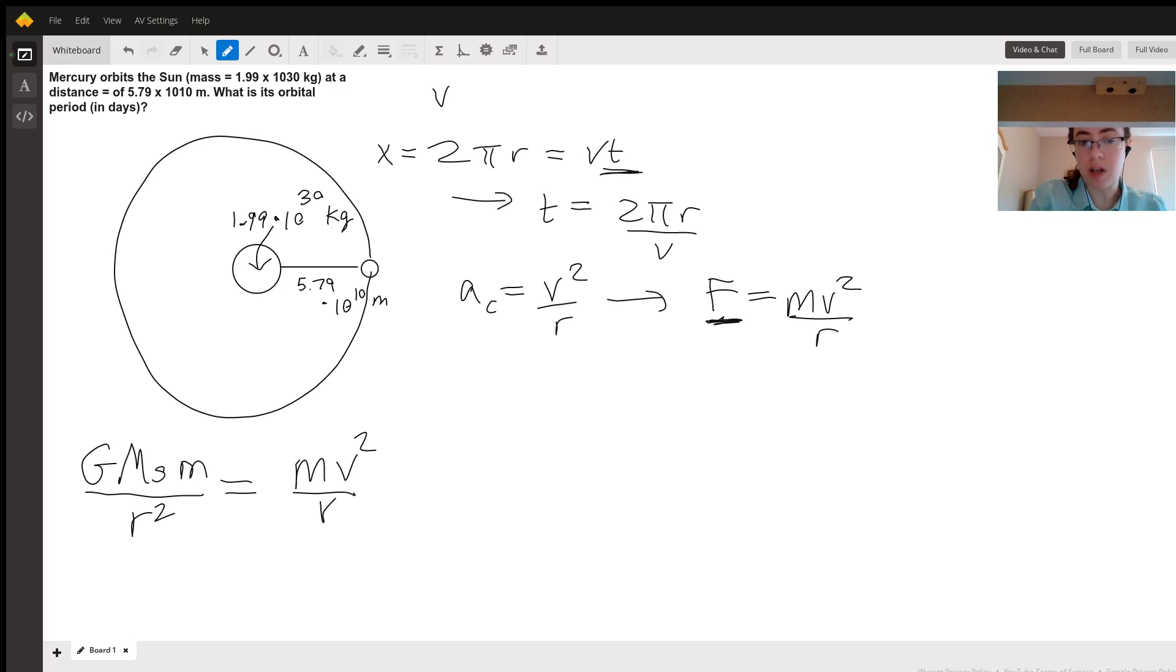And our goal is to solve for velocity. So with some algebra, this gives us v is equal to square root G m solar over r. So not dependent on the mass of Mercury. And indeed, if you have objects going in circular motion in an orbit, it is dependent only on their radius and the mass of the central object. So satellites at the same radius of Mercury would travel with the same velocity, even though they have much lower mass than Mercury does. So good. We now have velocity.